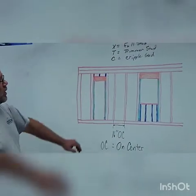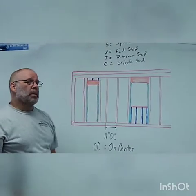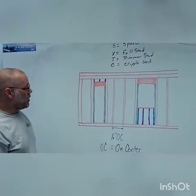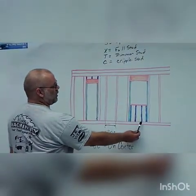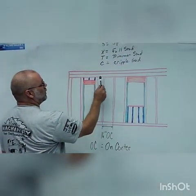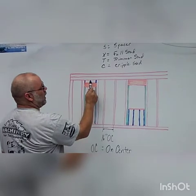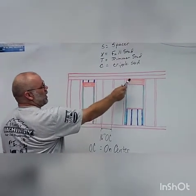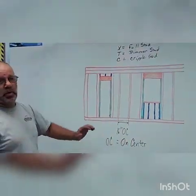And the last one is C. C stands for cripple studs. Cripple studs can either go below windows, above headers. Now this one doesn't have it because the header is pushed right up against the plate.